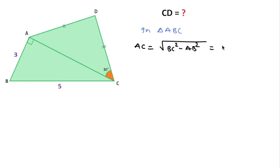BC is 5, so 5 squared, minus AB which is 3, so 3 squared. The root of 25 minus 9 equals root 16, so AC will be 4.